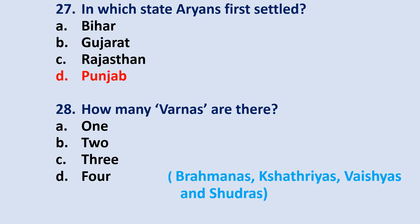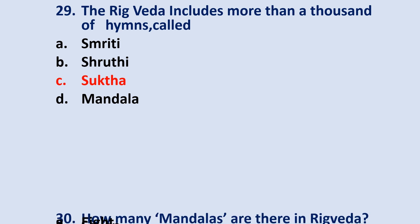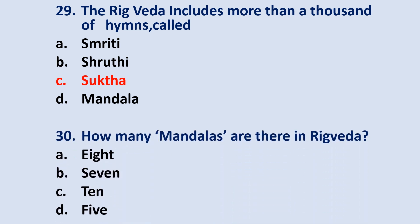Question number 28: how many varnas are there? The answer is option D — Four. That is Brahmanas, Kshatriyas, Vaishyas and Shudras. Question number 29: the Rig Veda includes more than a thousand hymns called? The correct answer is option C — Sukta. And the last question: how many mandalas are there in Rig Veda? The correct answer will be option C — Ten.